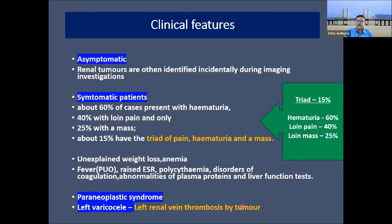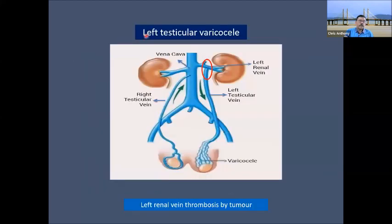An important sign is left-sided varicocele in older patients. The left testicular vein drains into the left renal vein at a right angle. A tumor invading the left renal vein can block the testicular vein, causing varicocele and sometimes hydrocele. Therefore, if an older patient of 50-60 years develops a new varicocele, you must think of left renal carcinoma causing blockage of the testicular vein.